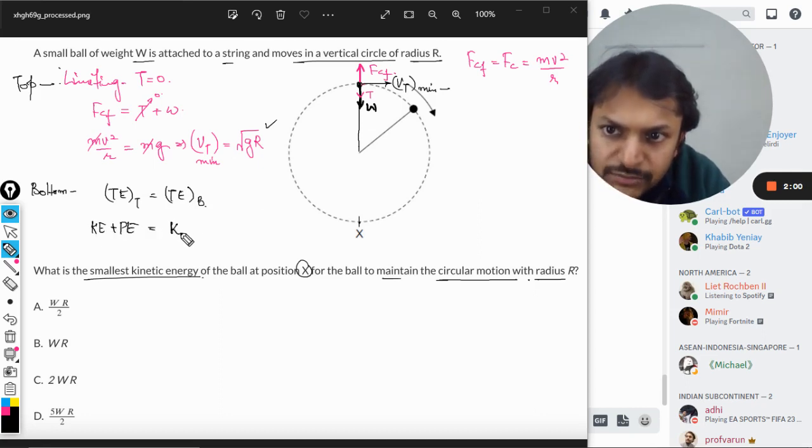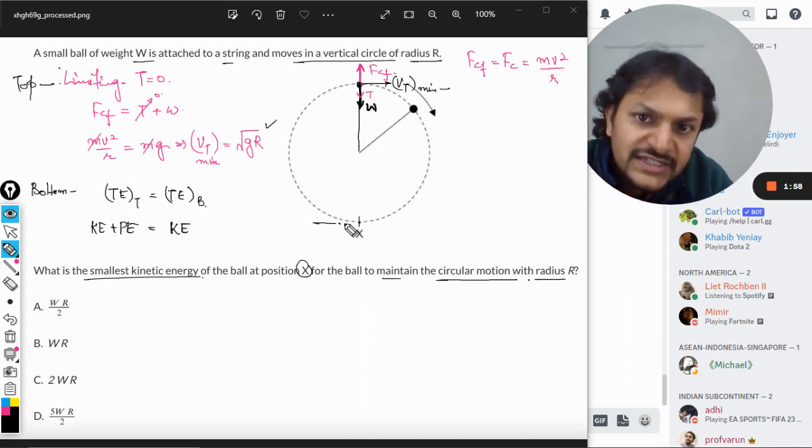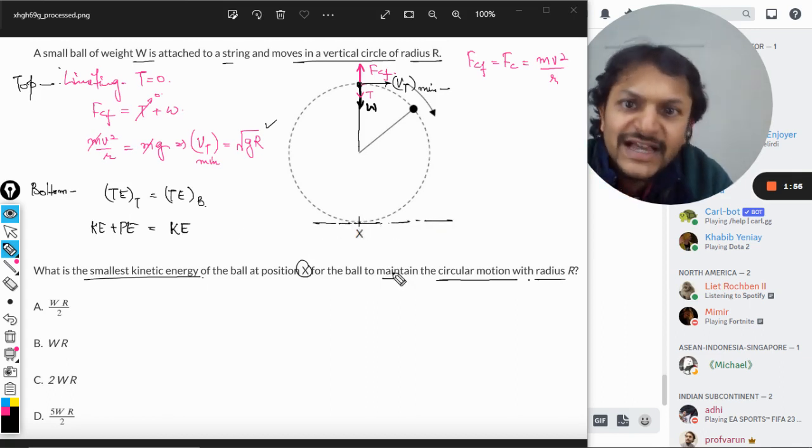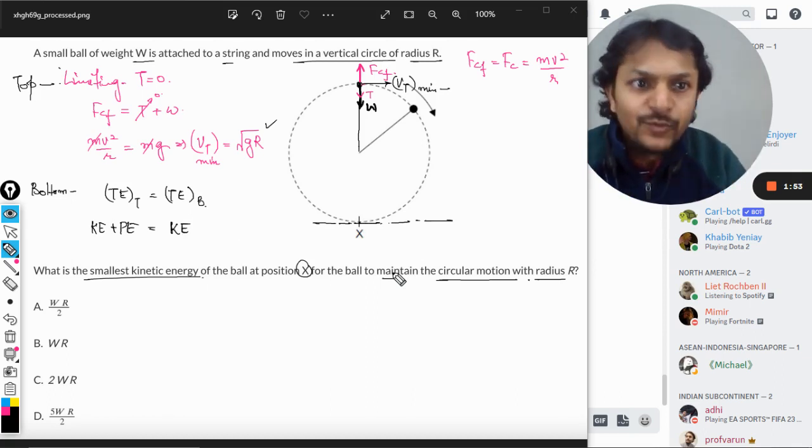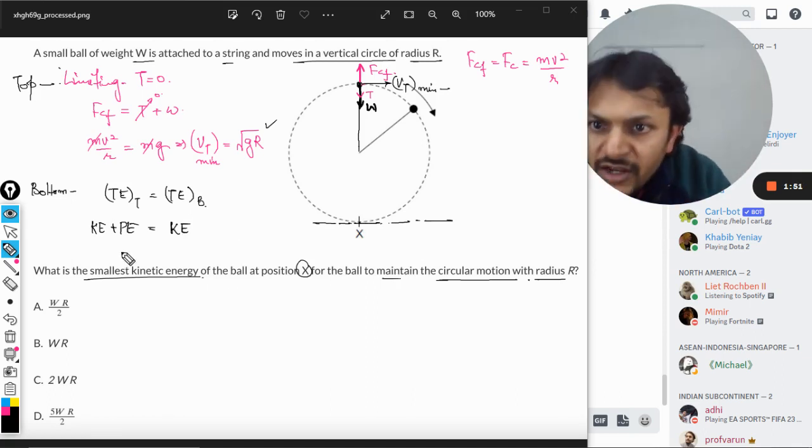At the bottom, only kinetic energy is considered. Why? Because we choose this as the datum line. So the potential energy at X will be equated with zero. From here let us now substitute the values.